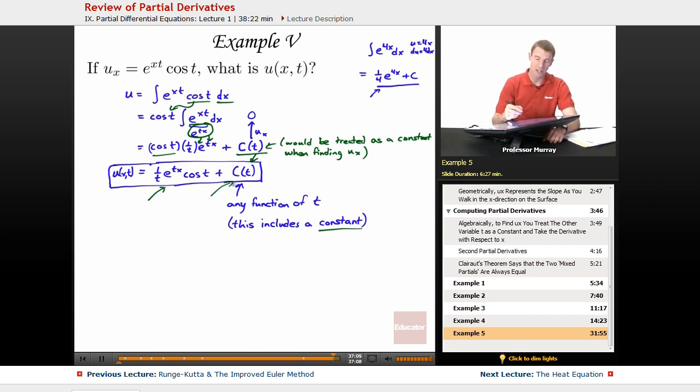And the reason that works is because if you took the x derivative, that c of t would just completely drop out and we'd get back to that e to the xt cosine t that we started with. So that wraps up our review of partial derivatives.